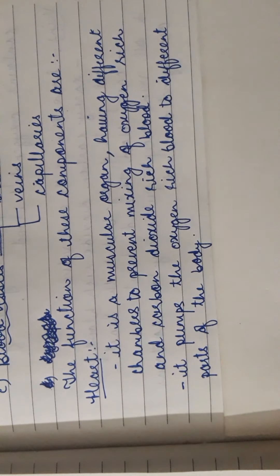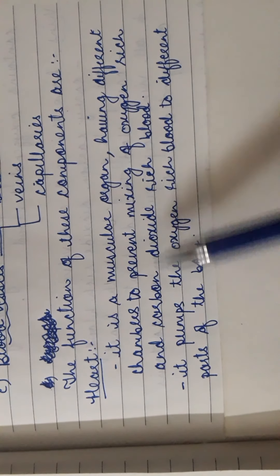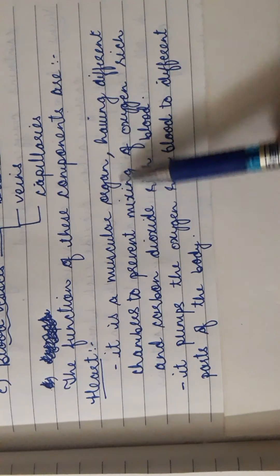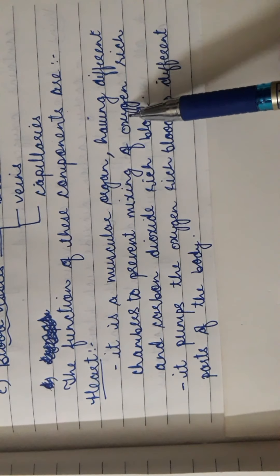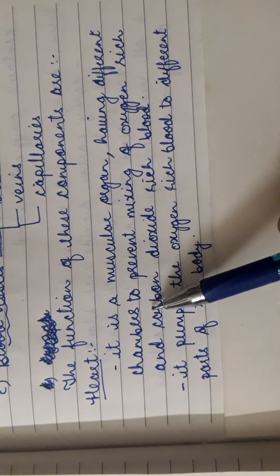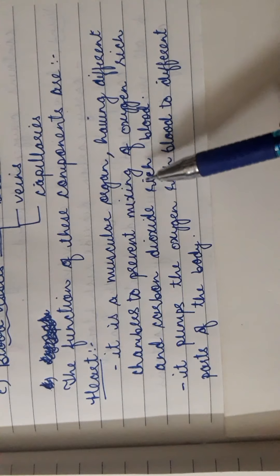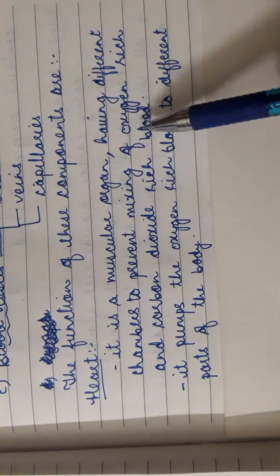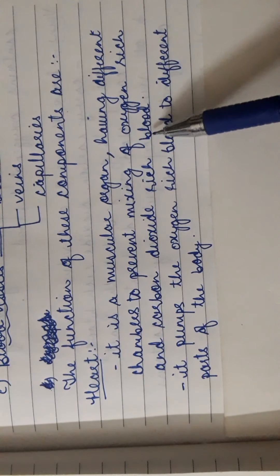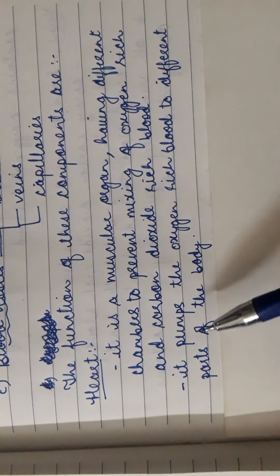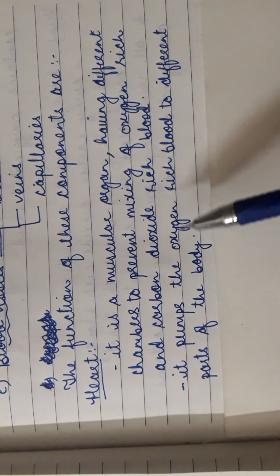So regarding the heart, it is a muscular organ and it has four chambers. These chambers exist so that mixing of oxygen-rich and carbon dioxide-rich blood does not occur. Its main function is that it pumps oxygen-rich blood to different parts of the body.